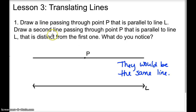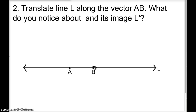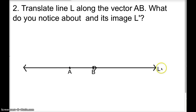Moving on to number two: translate line L along vector AB. Vector AB is right here in the middle. What do you notice about the line and its image? You're going to trace this entire image onto your computer paper and then slide it.